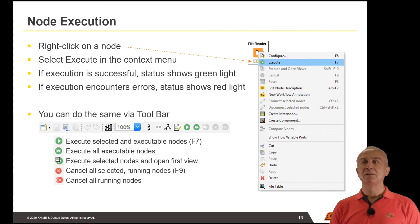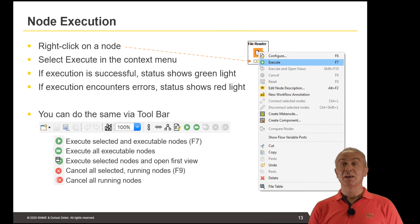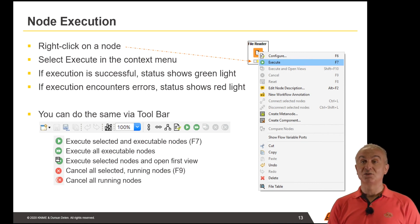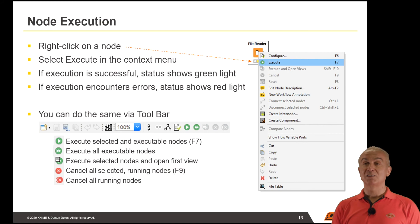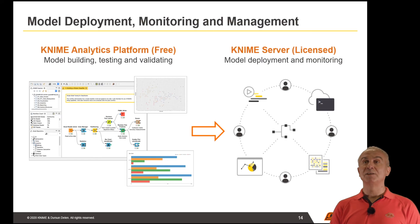If execution completes properly, there are no red indicators in the workflow. If not, you will see nodes that require your attention — go in and make adjustments and fixes before the whole workflow can be run and executed successfully.